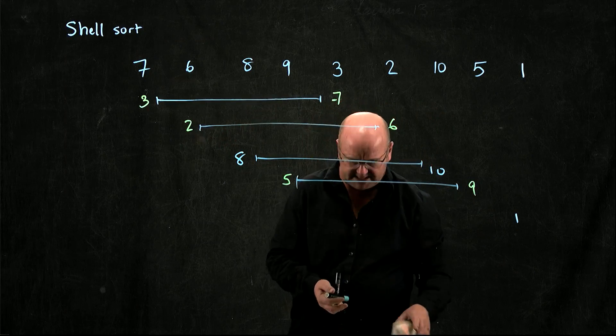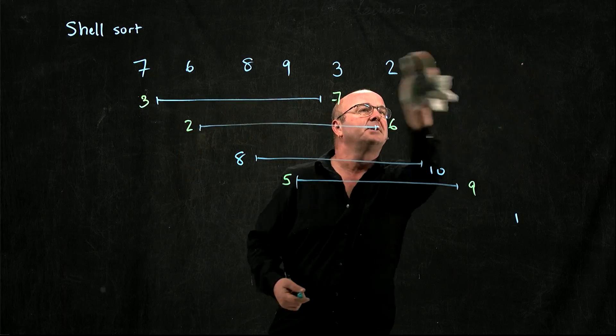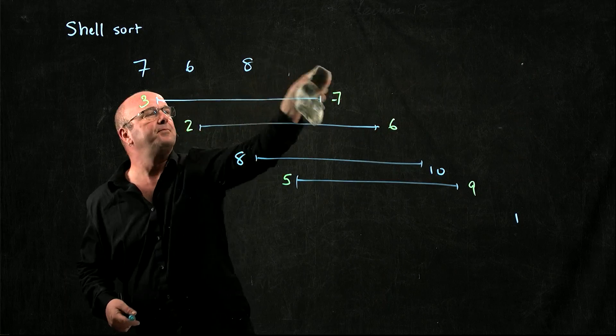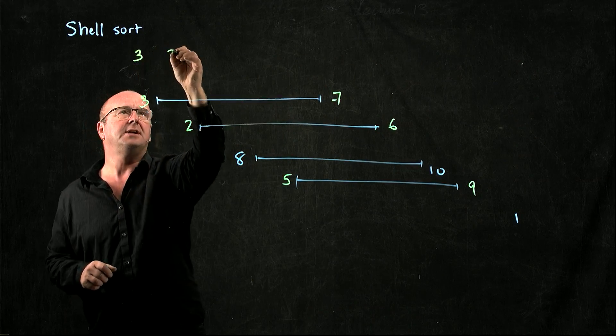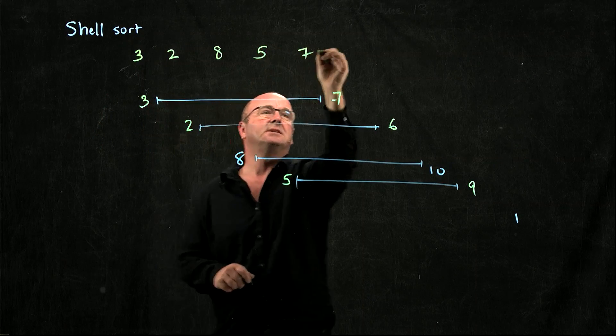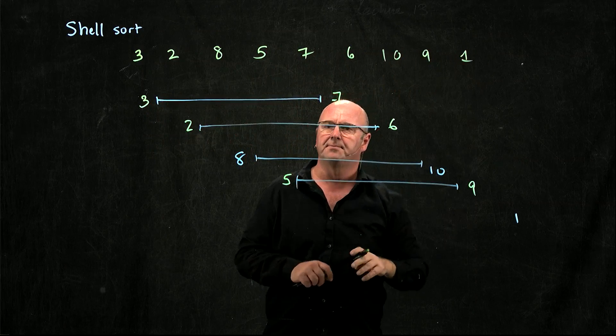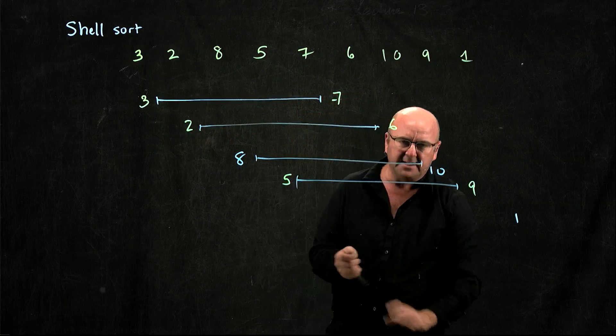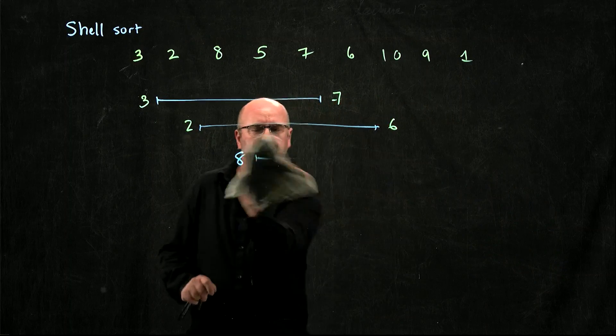Now what I do is I put those numbers back together into my list. So my list now becomes 3, 2, 8, 5, 7, 6, 10, 9, 1. So hopefully I've moved some of the smaller numbers from the right side to the left side.